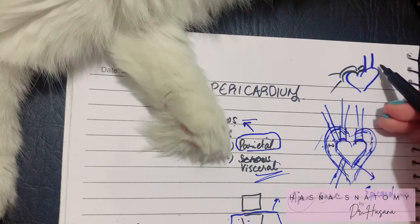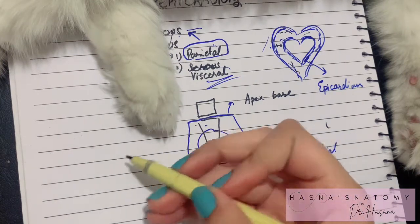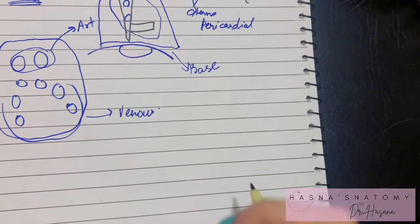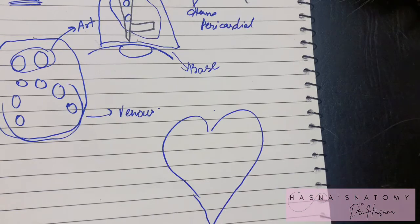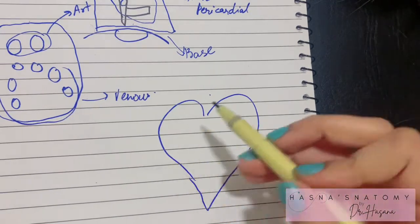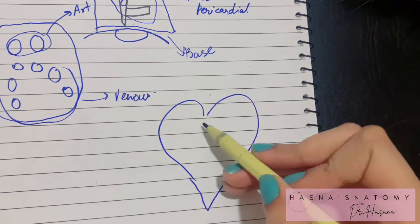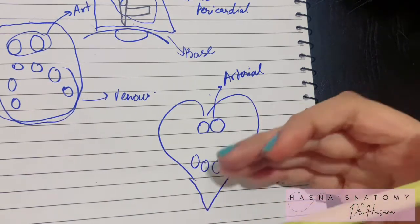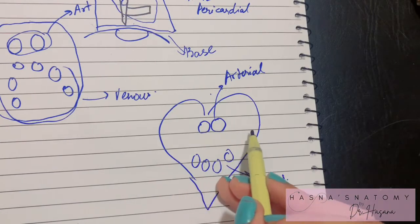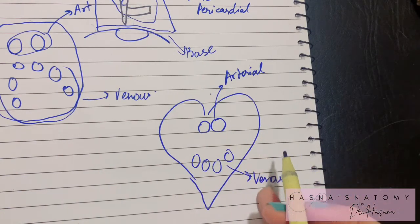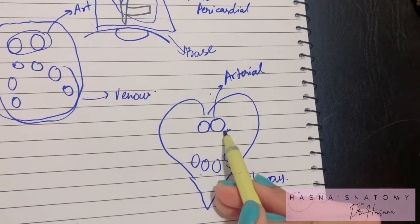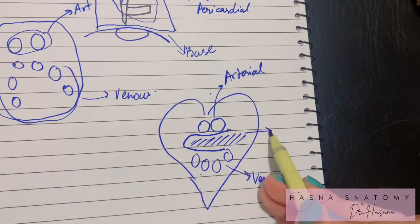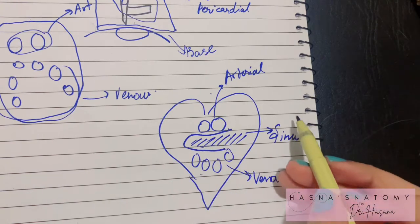Now let's talk about the sinuses of the pericardium. A sinus is essentially an empty space or pathway. To understand this, we need to touch on embryology. In the developing embryo, the heart's vessels are simplified into two tubes: an arterial tube and a venous tube. The arterial tube encloses the ascending aorta and pulmonary trunk; the venous tube encloses the superior and inferior vena cava along with the pulmonary veins. The passage between these two tubes, where the visceral and parietal pericardium become continuous, leaves a space called the transverse sinus.